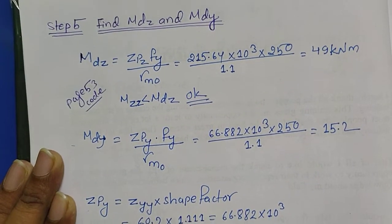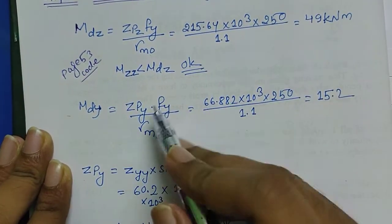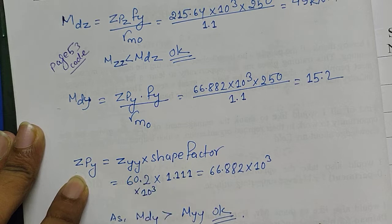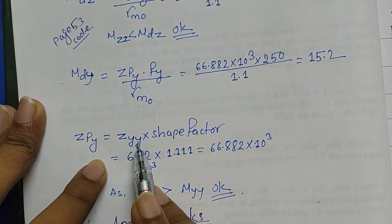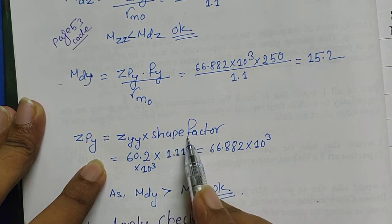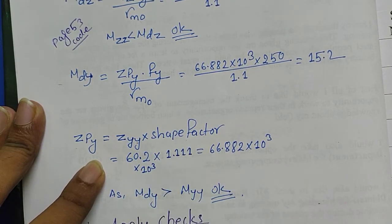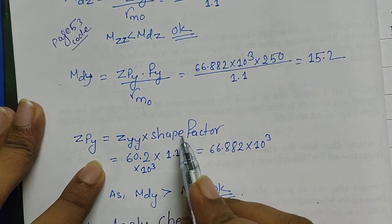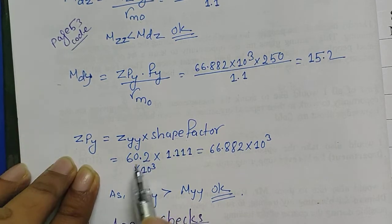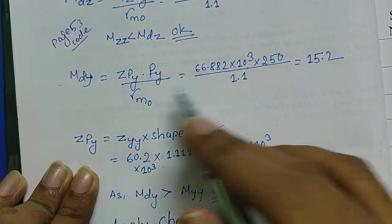I have calculated this value and it is less than 84 epsilon for the section to be plastic. As it is less, so the section is plastic. Now the next step is to find MDZ. For MDZ we have a formula ZPZ times FY by gamma M0. It is available in code page number 53. The second next step is to find MDY. The difference is ZPZ and ZPY. For ZPY we have formula ZPY equals ZYY into shape factor. ZYY is taken from the table and shape factor is taken from the table last page where you select the section.